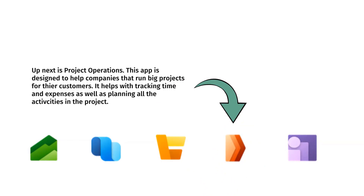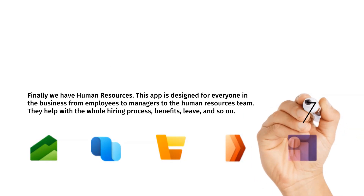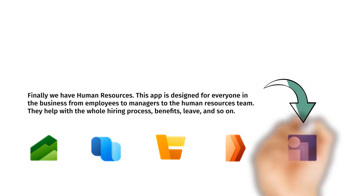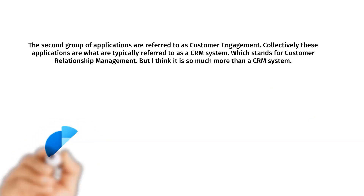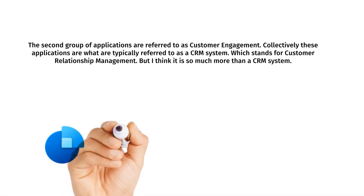Up next is Project Operations — this app is designed to help companies that run big projects for their customers, tracking time and expenses as well as planning all the activities in the project. Finally, we have Human Resources — this app is designed for everyone in the business, from employees to managers to the HR team. It helps with the whole hiring process, benefits, leaves, and so on.